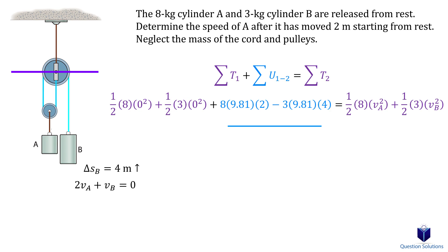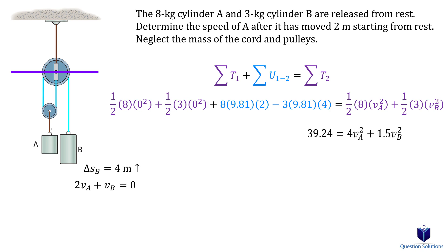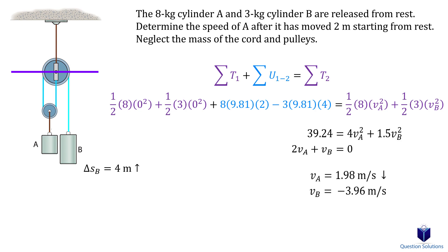On the right side we have half the mass times the velocity of A squared plus half the mass times the velocity of B squared. Now we have two equations with two unknowns and can solve for the velocities of cylinders A and B. We get a negative value for B, which simply means it's going opposite to the positive direction — so it's going up at a velocity of 3.96 meters per second.